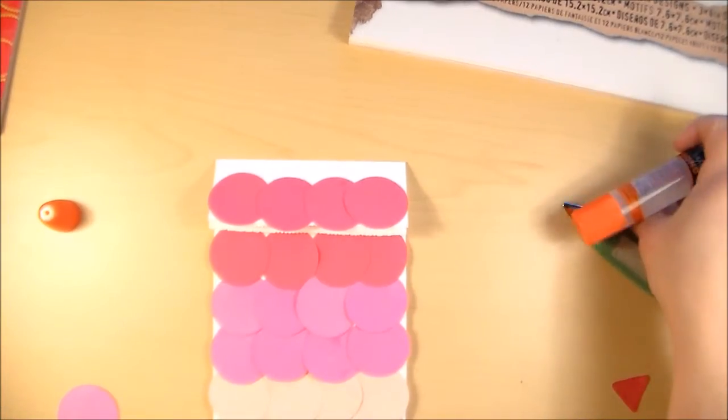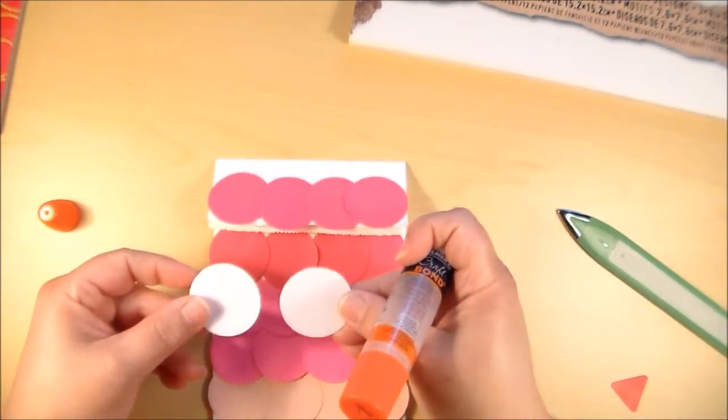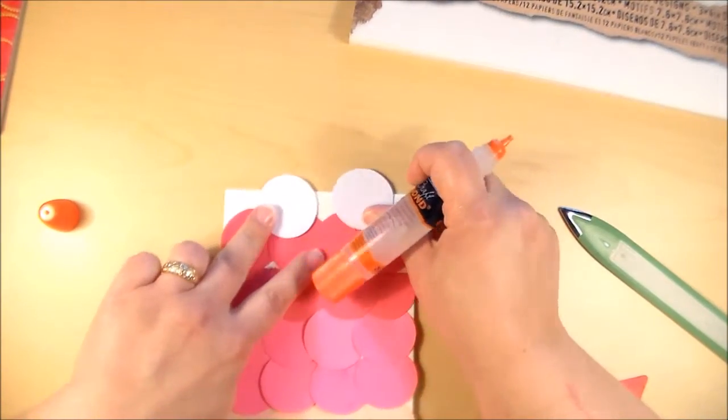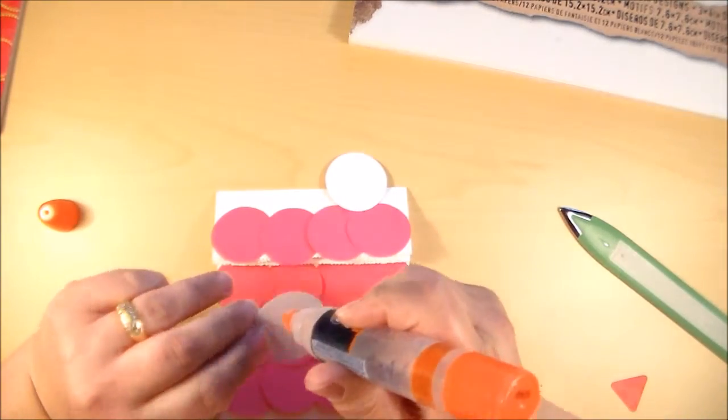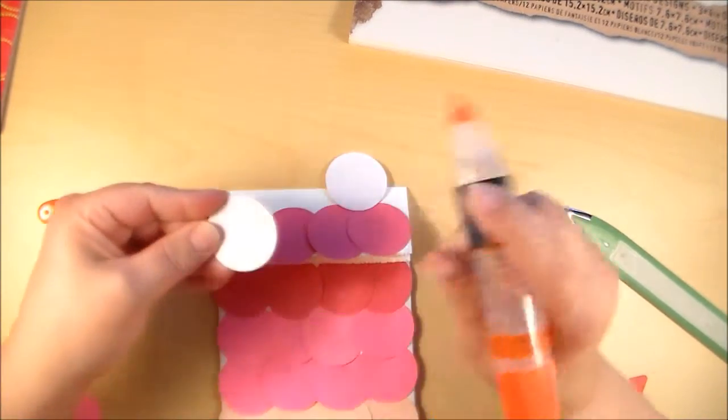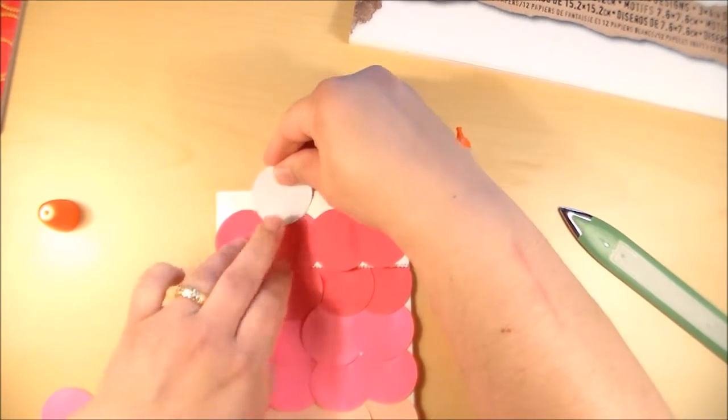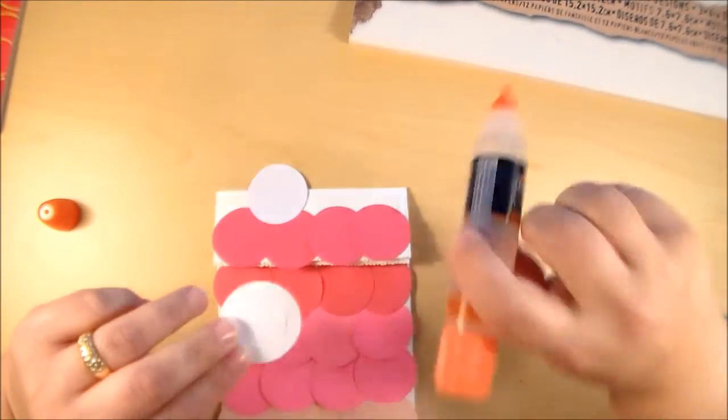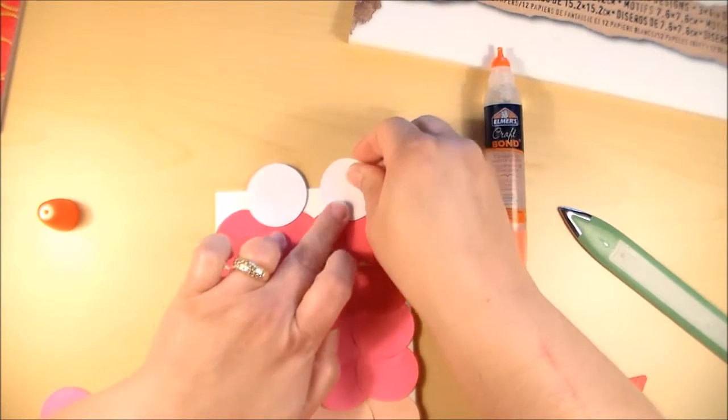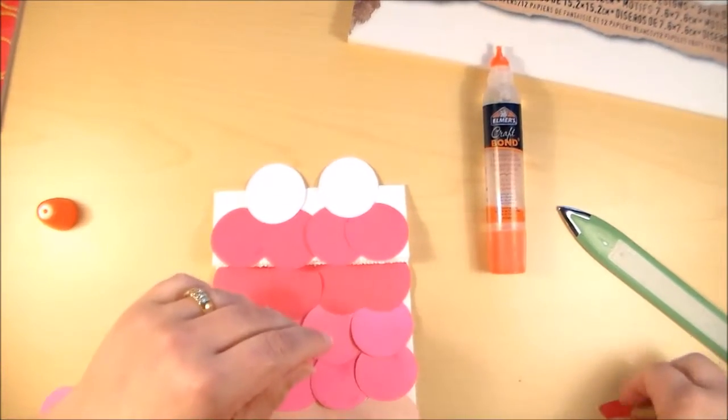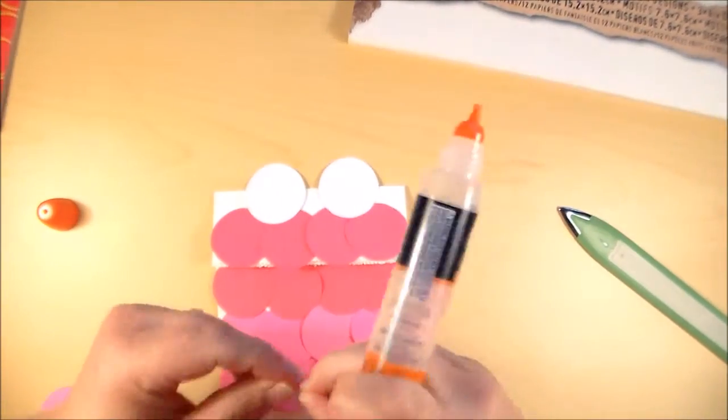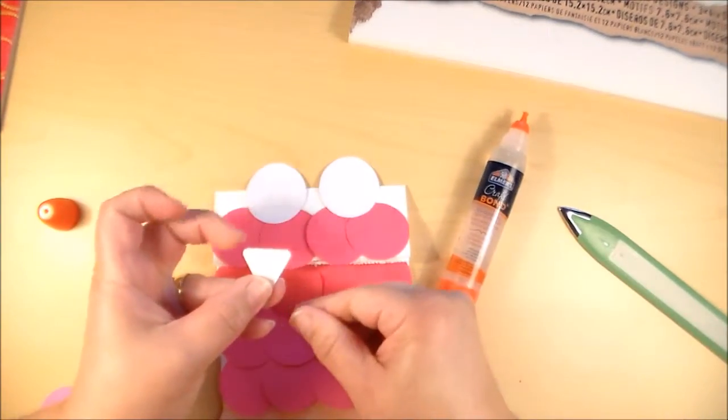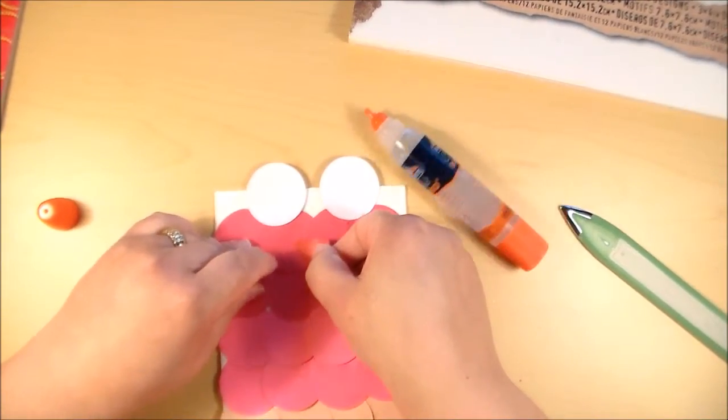And now I'm going to take the two circles that I cut for the eyes, and I'm going to position them about so, and I put some glue on what would be about the bottom half of the eyes. I'm going to take the nose, or the beak, whatever you want to call it, whatever works for you. Put some glue on the top half of it, and position it about so.